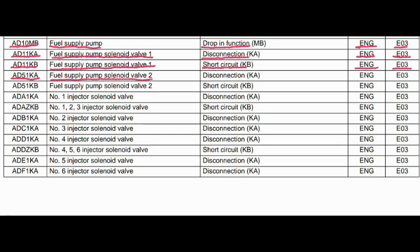Code AD51KA. Where is the problem? Fuel supply pump solenoid valve 2. What is the problem? Disconnection. Engine control is related to this fault, and the action code is E03. Code AD1KB — where is the problem? Fuel supply pump solenoid valve 2. What is the problem? Short circuit. Engine control system is related to this fault, and the action code is E03.